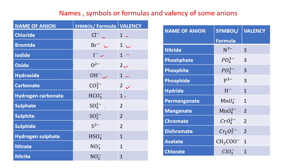Sulfate: SO4 2-, valency is 2. Sulfite: SO3 2-, valency is 2. These two look confusing — sulfate is SO4 2- and sulfite is SO3 2-. Hydrogen sulfate: HSO4-, valency is 1.